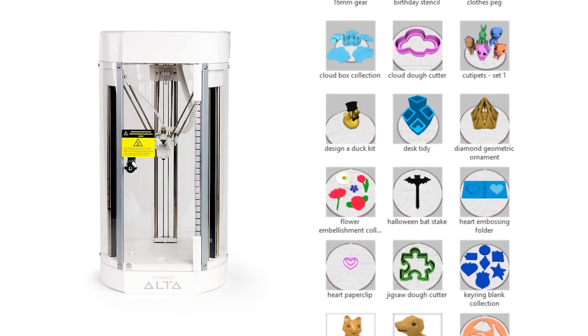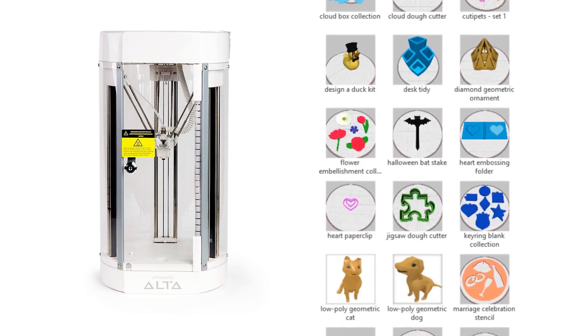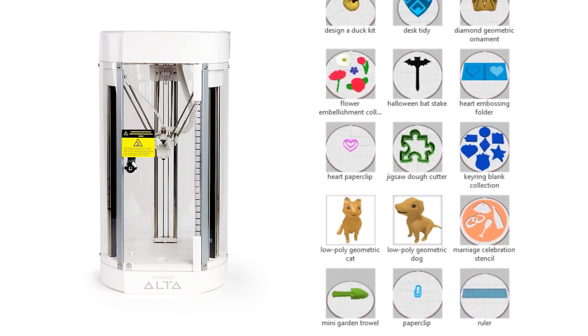Access the free designs for your Silhouette Alta. Your Silhouette Alta comes with 25 free designs you can print. These designs will appear in your Silhouette Library when you register your new machine. To access your library, open Silhouette 3D.